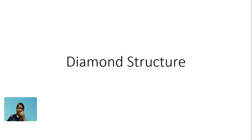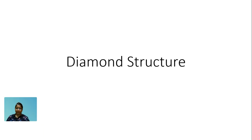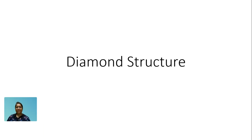Hello students. In this video, let's talk about diamond structure. Diamond is a carbon allotrope. You will probably see graphite structure in school, but in this lecture we will talk about the structure of diamond.